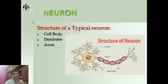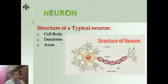A neuron consists of three parts: the cell body, the dendrites, and the axon. In this diagram you can see a typical neuron.